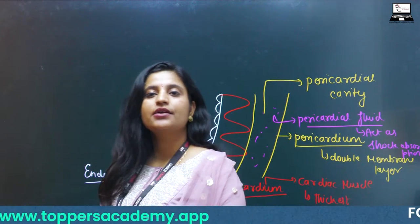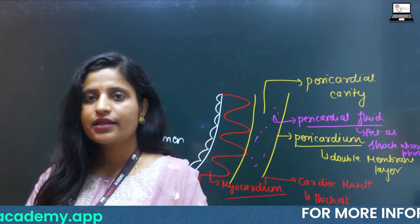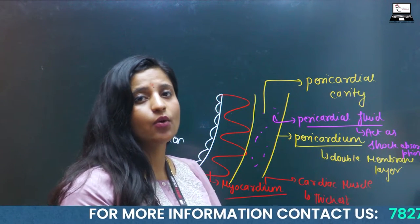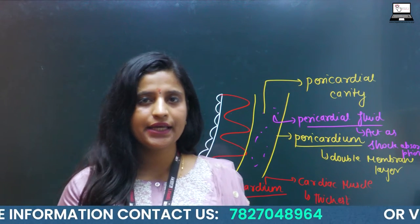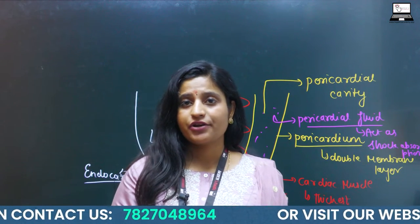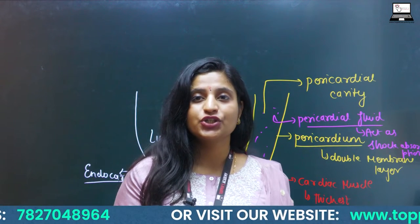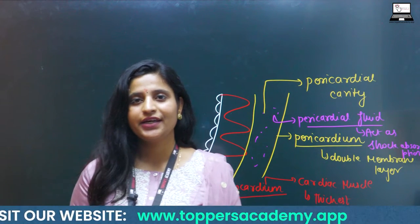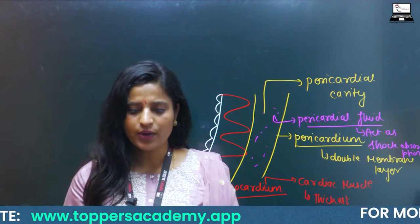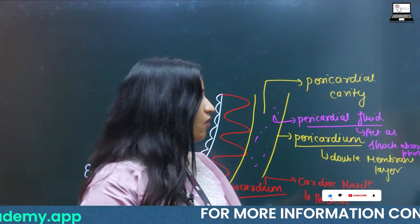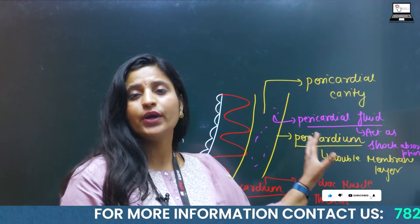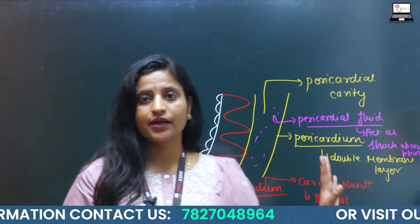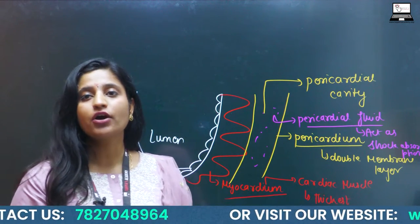This pericardial fluid acts as a shock absorber. When someone receives an external injury, the organ is not necessarily damaged because this double membrane layer and the pericardial fluid absorb the shock and protect the organ.